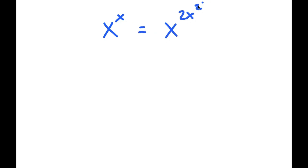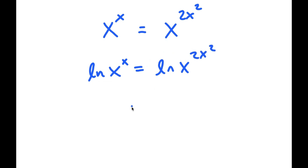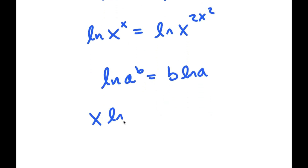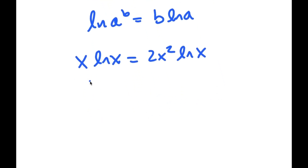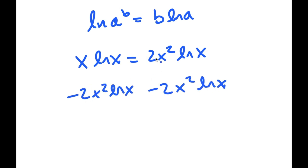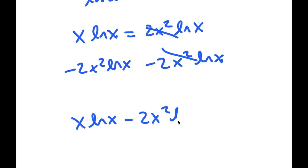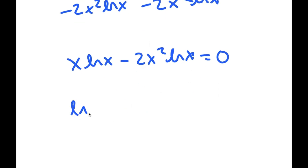In this problem, I'm solving x to the power of x equals x to the power of 2x squared. To solve this, I'll start by taking the ln on both sides. Using the rule that ln of a to the power of b equals b times ln a, this becomes x times ln x equals 2x squared times ln x. Subtracting 2x squared times ln x from both sides, I get x times ln x minus 2x squared times ln x equals 0. Factoring out ln x gives ln x times x minus 2x squared equals 0.